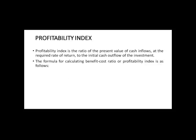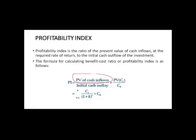The third measure for calculating whether you should invest in a project is the Profitability Index. Profitability Index is a simple calculation: it is the present value of cash inflows divided by the initial cash outflow. You take the cash inflows over several years, convert them to their present values, and then divide by the initial cash outflow — giving you a ratio or a number.